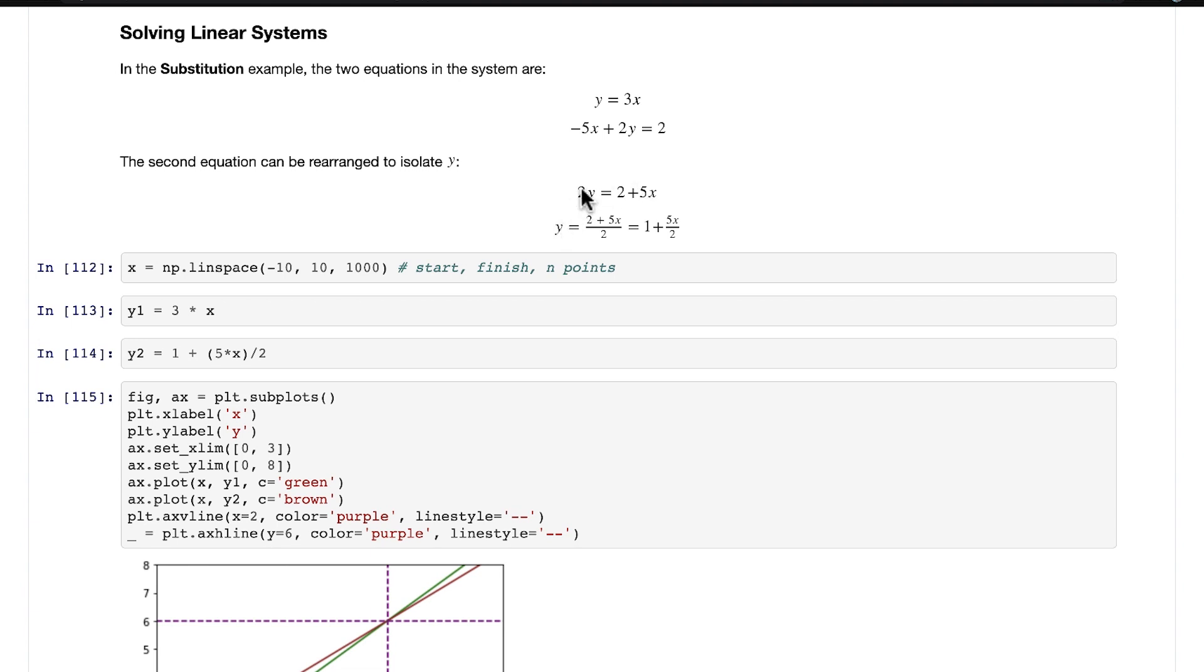Then we can divide by 2 on both sides of the equation. That isolates y on the left, and it puts this expression here over 2, which can be simplified to 1 + 5x/2.